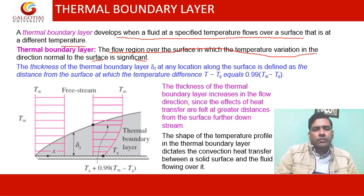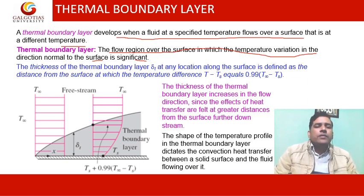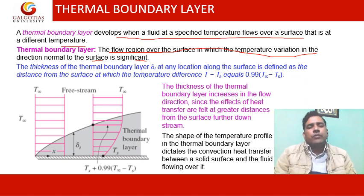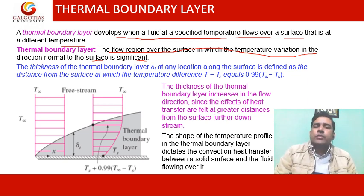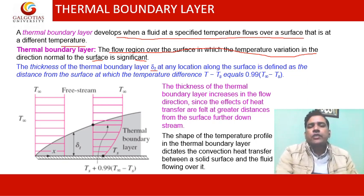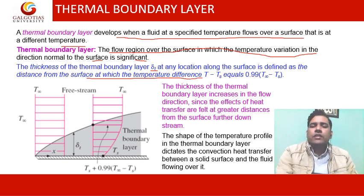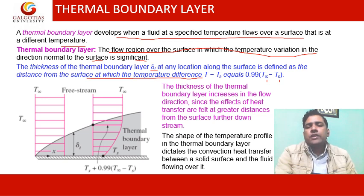Just like the fluid boundary layer, the same concept is applied here, except that in the fluid boundary layer the velocity gradient was not zero, while similarly here the thermal gradient is not zero. The thickness of the thermal boundary layer is given by delta T at any location along the surface, defined as the distance from the surface at which T minus T_surface equals 0.99 times the difference between ambient temperature and surface temperature. The thickness of the thermal boundary layer increases in the flow direction since the effect of heat transfer is felt at greater distances from the surface further downstream.